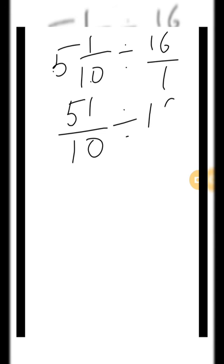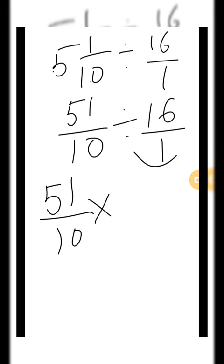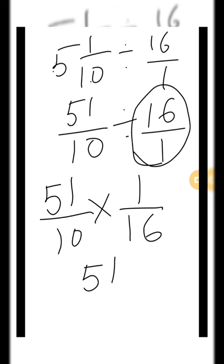Now replace the division sign with the multiplication sign. 51 divided by 10, multiply. And we will reciprocal the divisor. What do we do? Reciprocal. 1/16. Now we will cross check. This will not be cut. And we will cancel. 51 divided by 160.